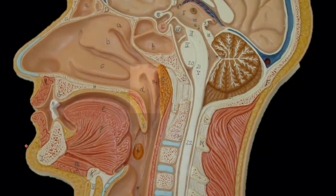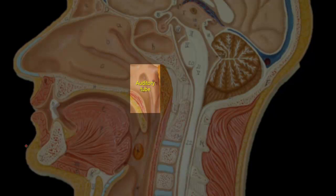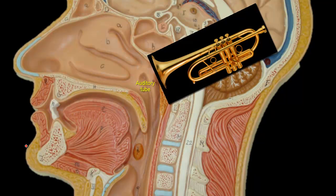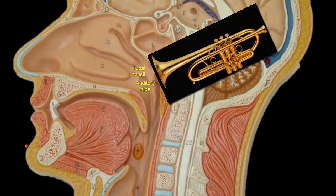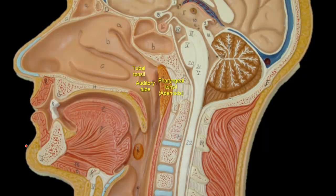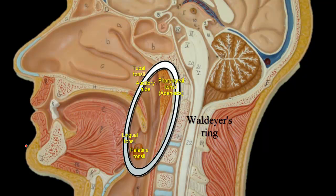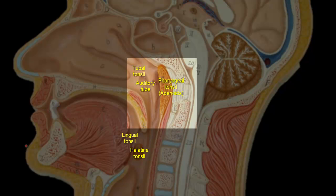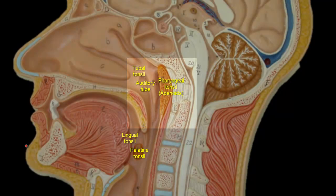The opening of the auditory tube lies in the lateral wall of the nasopharynx. The auditory tube equalizes pressure in the middle ear with atmospheric pressure. The torus is the prominent rounded lip around the opening of the auditory tube, formed of cartilage and covered by lymphatic tissue called the tubal tonsil. Another tonsil nearby is called the pharyngeal tonsil or adenoids — a collection of lymphatic tissue in the posterior superior wall of the nasopharynx. The pharyngeal, tubal, palatine, and lingual tonsils constitute Waldeyer's ring, a defensive ring at the beginning of the respiratory and digestive passages. An enlarged pharyngeal tonsil can obstruct airflow from the nasal cavities, resulting in mouth breathing and snoring.